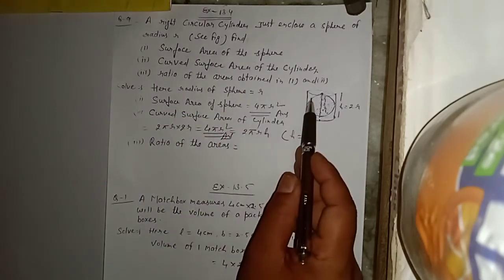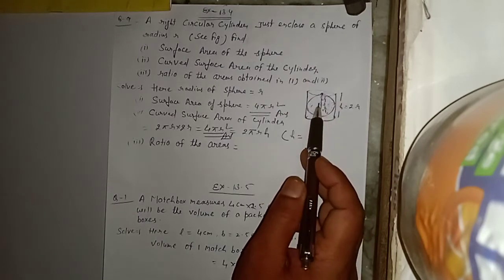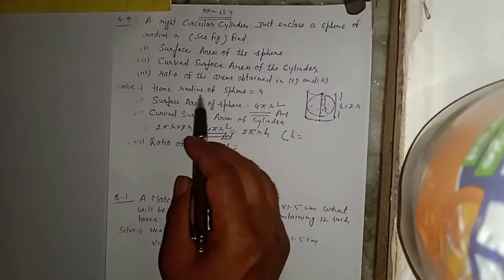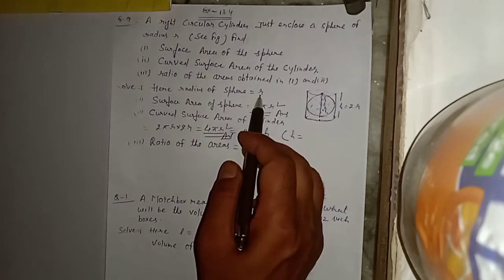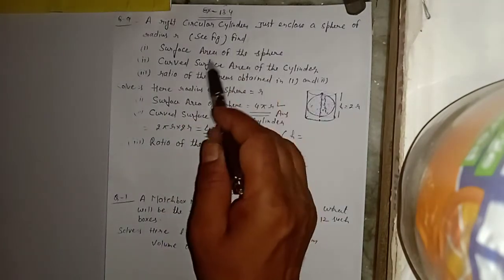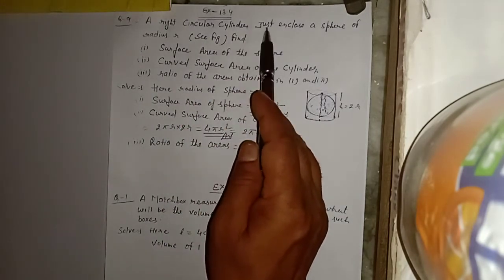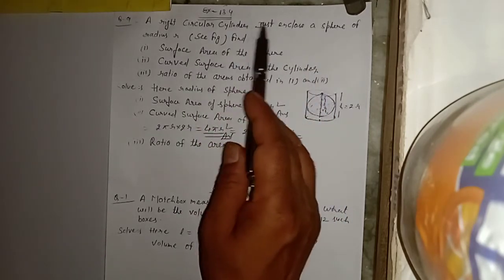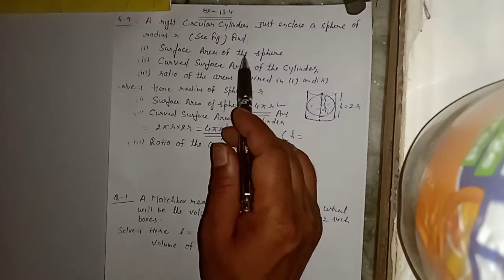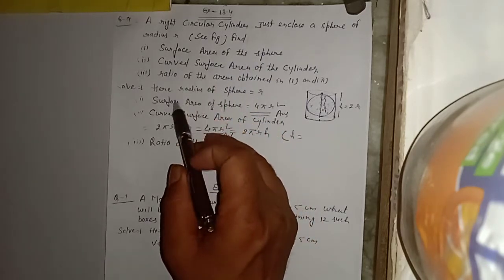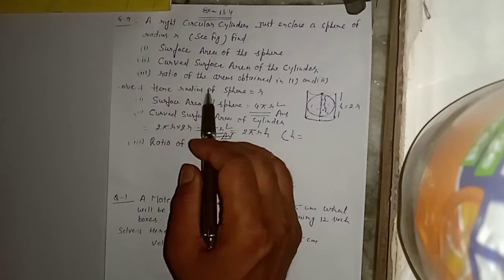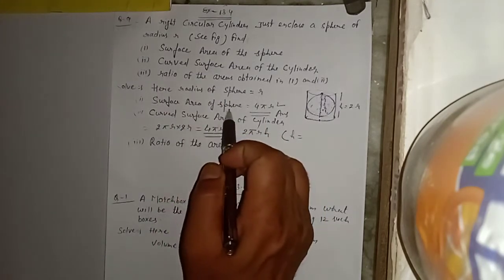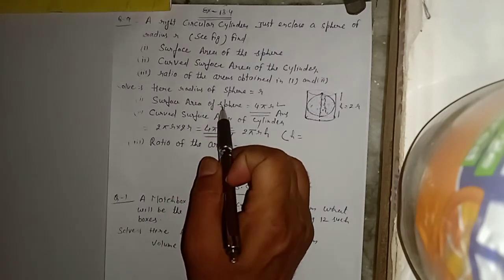Figure में cylinder के अंदर एक sphere है। तो पहले लिखेंगे: radius of sphere = r, जैसा question में दिया है। Right circular cylinder just encloses a sphere of radius r। सबसे पहले first part में surface area of sphere निकालना है — surface area of sphere = 4πr².